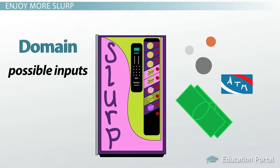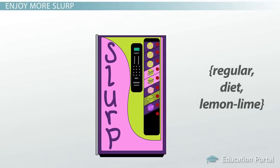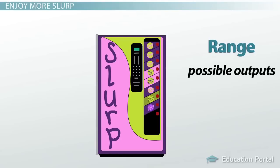Along with there being a limited number of things you can put into the machine, there are also a limited number of things you might get back out. No matter how you pay, there's no way you're going to get a cheeseburger out of that machine. Let's say the only possible sodas you can get are regular, diet, and lemon-lime. That makes these three things the range — the collection of possible outputs. Now that we've got an idea of what the domain and range are, let's take a look at some real mathematical functions.